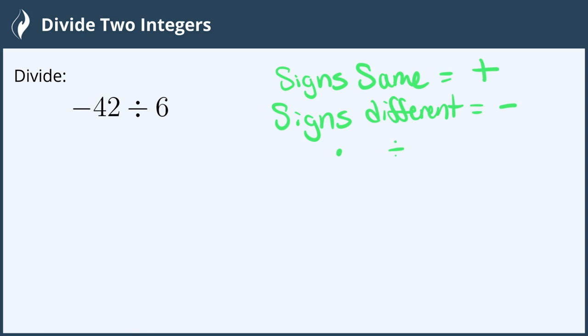So here I have a division: negative 42 and a positive 6. There's no sign in front of the 6, so it's automatically positive.